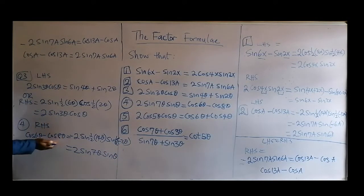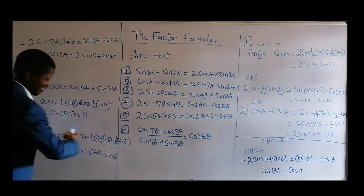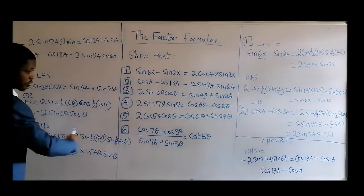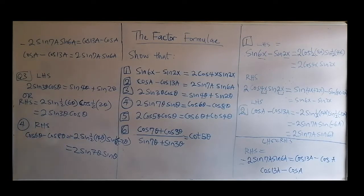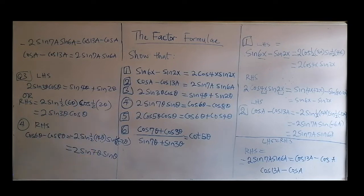So if you are subtracting cosines, you must have all sines on the product side, and don't forget the minus. But if it is plus — addition of cosines — it will be all cosines as a product. So that's from the right-hand side to left-hand side.